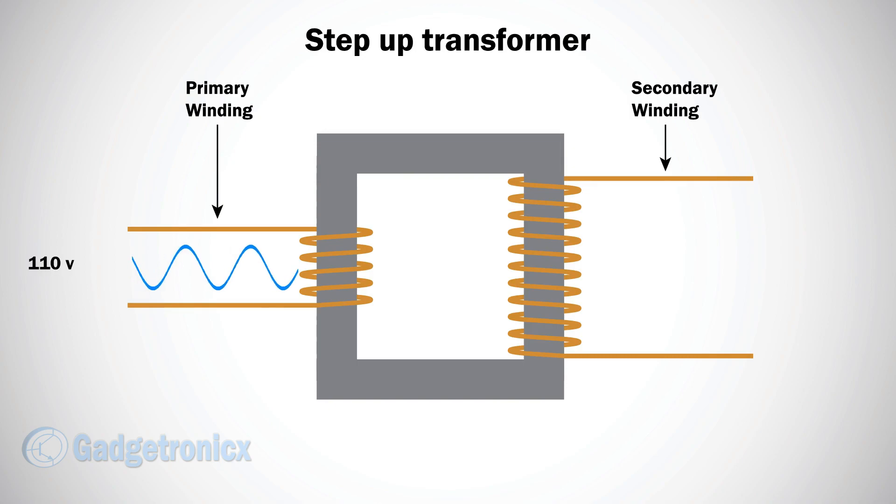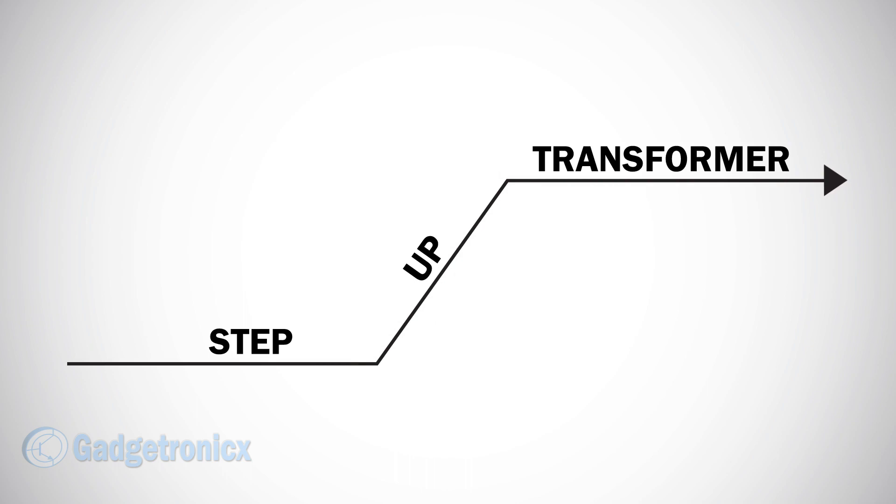Now voltage induced at the secondary side will be 220V. Here the coil windings at the secondary side is twice the primary winding. The winding ratio will be 1 is to 2. Therefore the voltage is stepped up from 110V to 220V. This is a step up transformer.